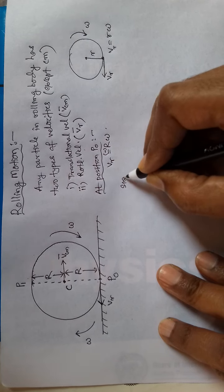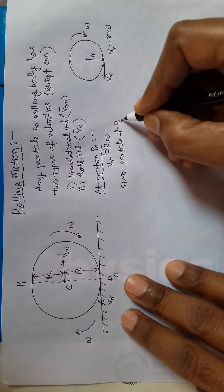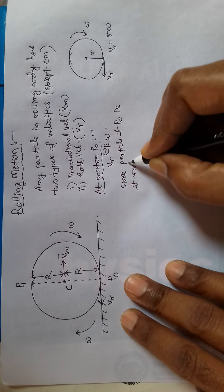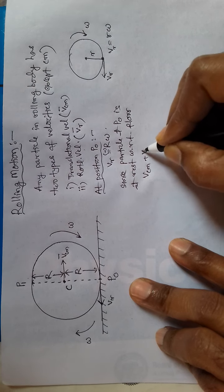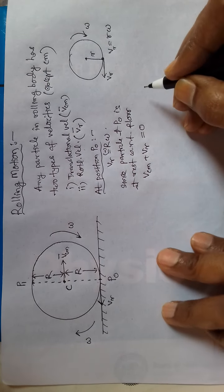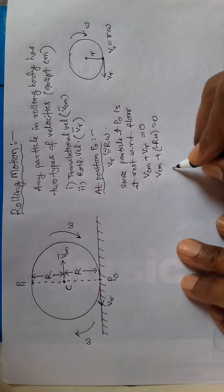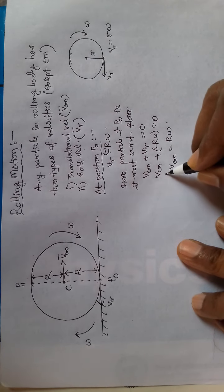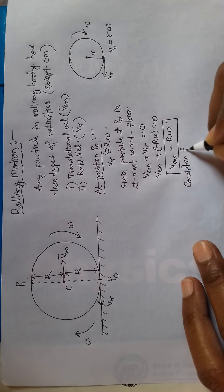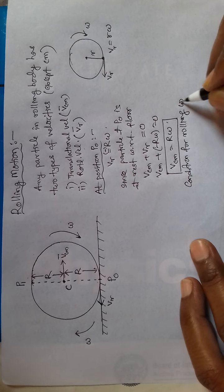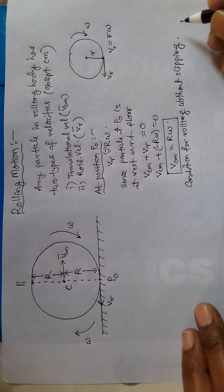Since the particle at P0 is at rest with respect to the floor, the sum of the two velocities must be zero: Vcm plus VR equals zero, so Vcm plus (negative R omega) equals zero, giving Vcm equals R omega. This is the condition for rolling without slipping.